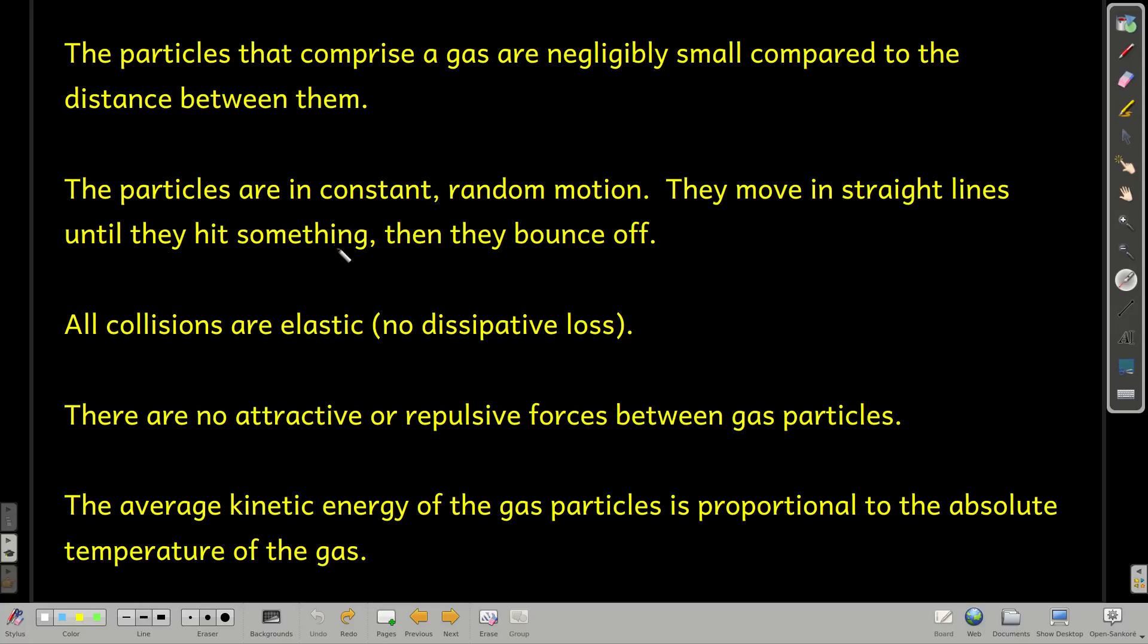These five statements are what the kinetic molecular theory of gases says. The first one says that in a gas, the particles that the actual gas molecules or atoms themselves are negligibly small compared to the distance between them. So really what we do for what we call an ideal gas is we just can say that the actual space taken up by the molecules is so small that we don't have to count it at all. It's mostly empty space, almost entirely empty space.